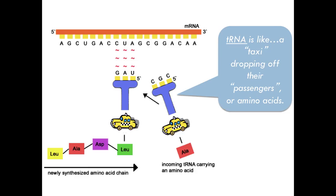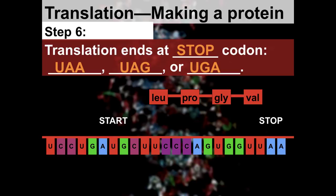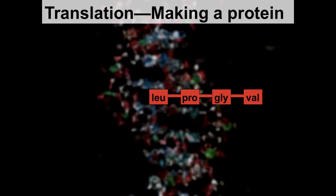For the purposes of this class, we're going to count the stop as an amino acid. So when asked how many amino acids a protein has, we count the stop codon too. In this example, it's five: leucine, proline, glycine, valine, and then the stop. The tRNA acts like a taxi dropping off passengers — the amino acids — at the ribosome to be connected together to make our protein.